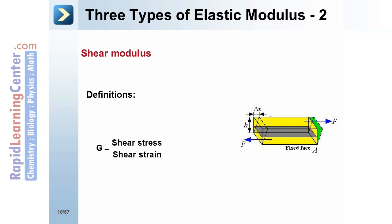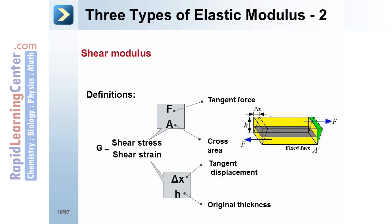Next, the shear modulus. This is defined as the shear stress divided by the shear strain. This basically just applies to a different direction, a shearing direction. The shear stress is the force per area again, and the shear strain is a change in distance over the original thickness.